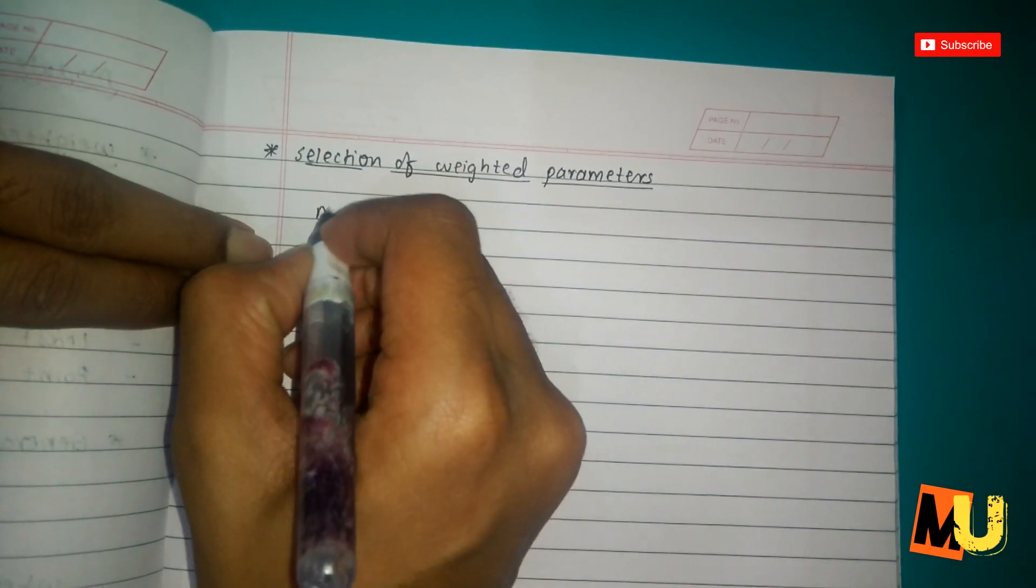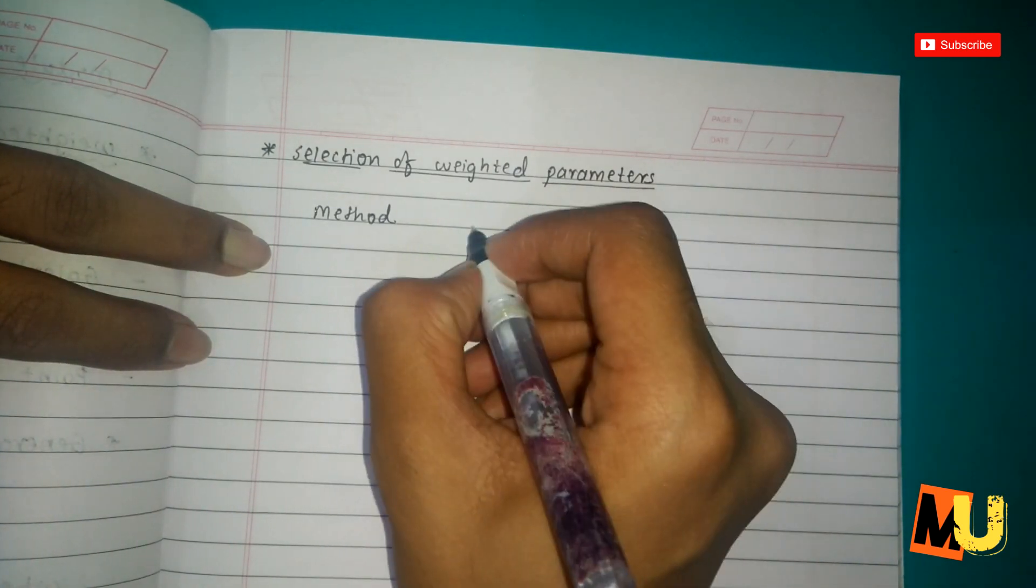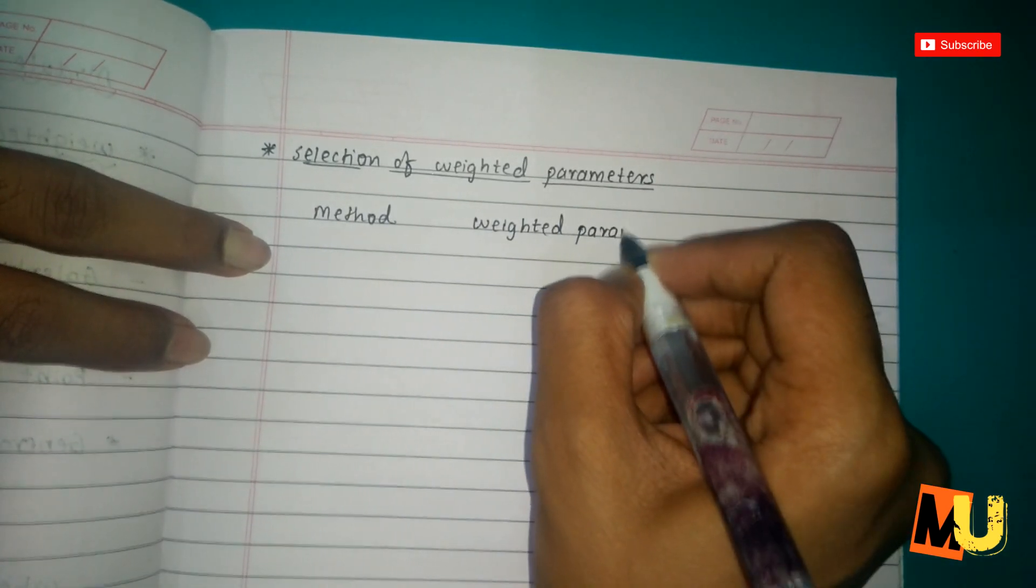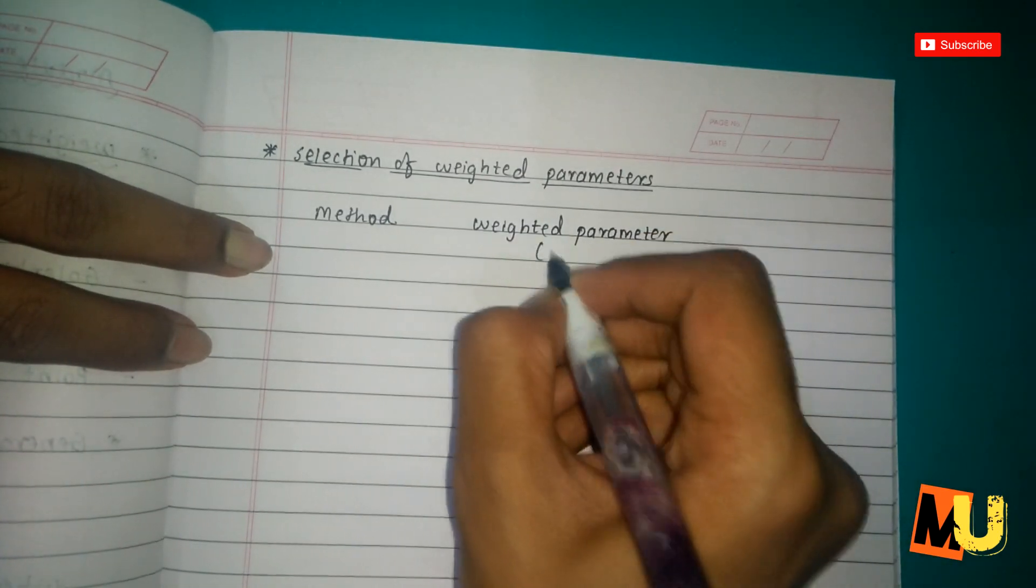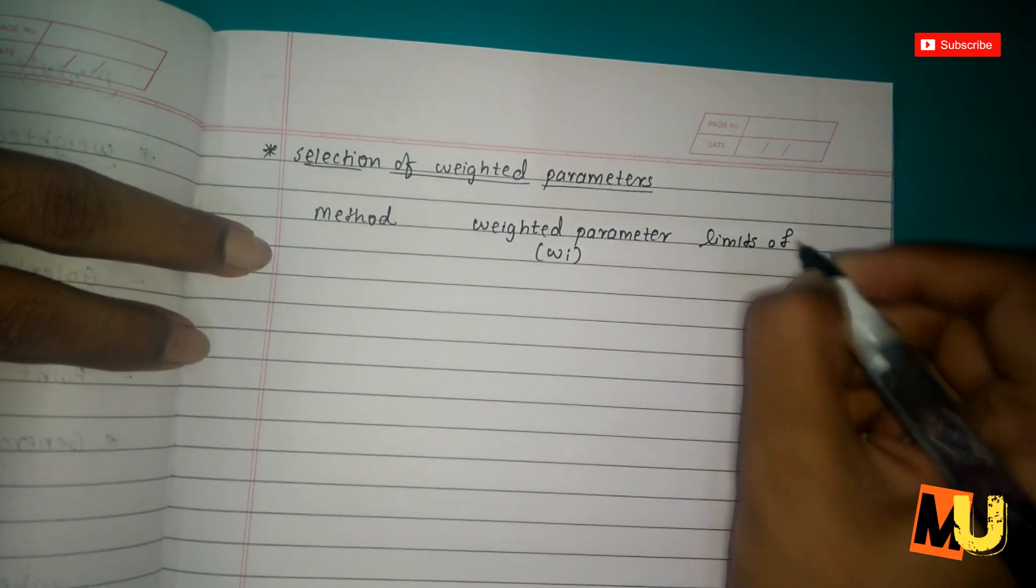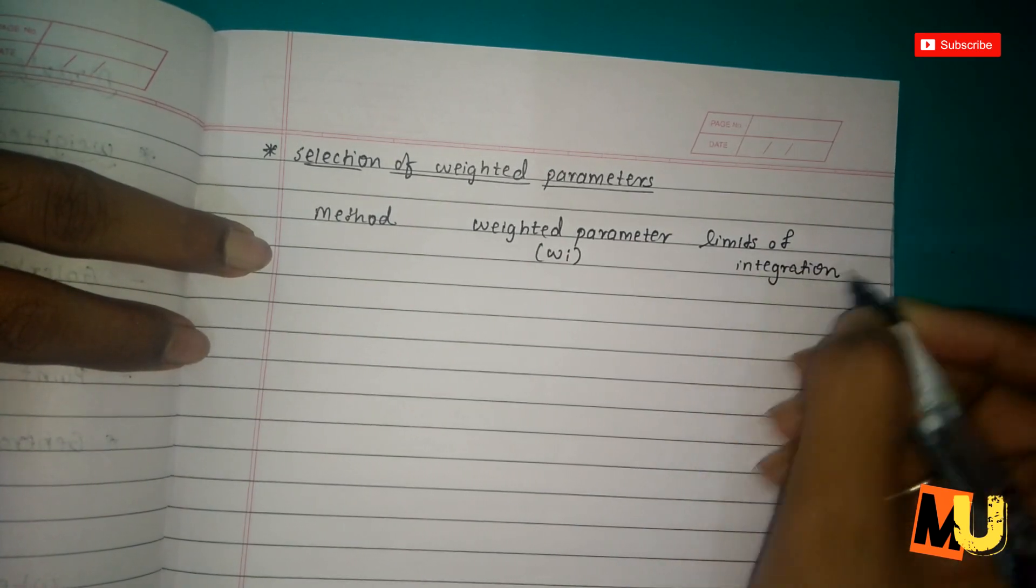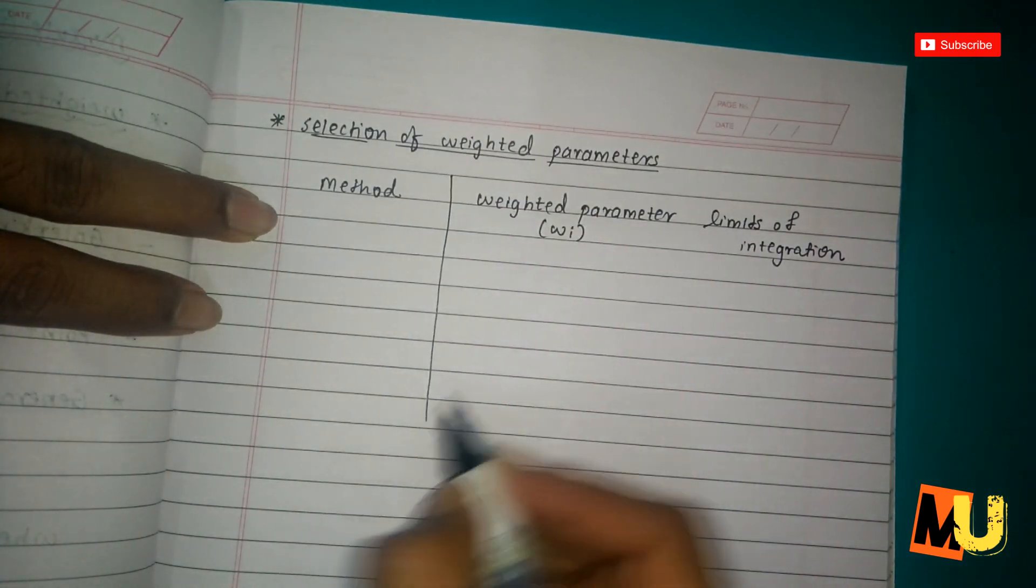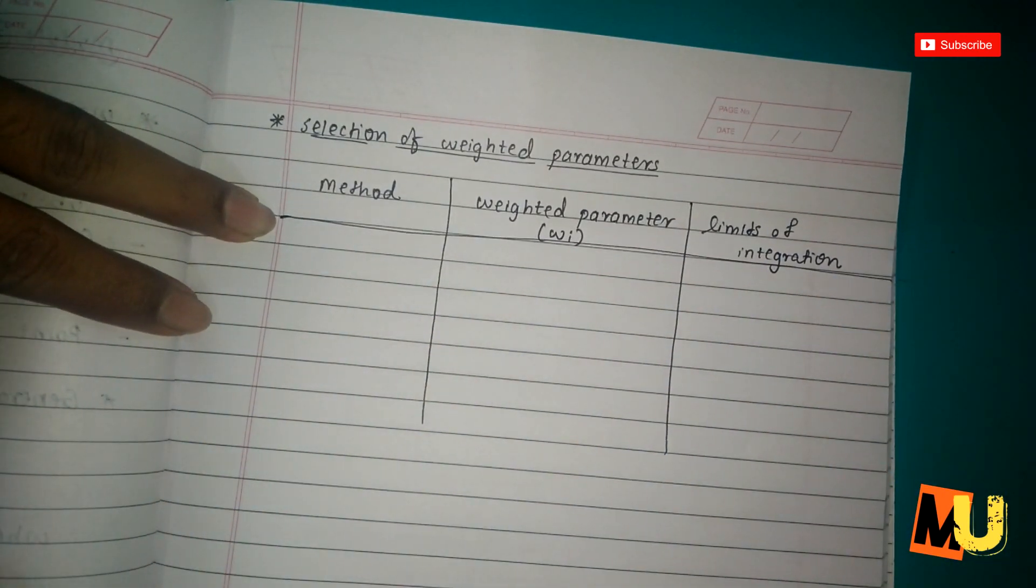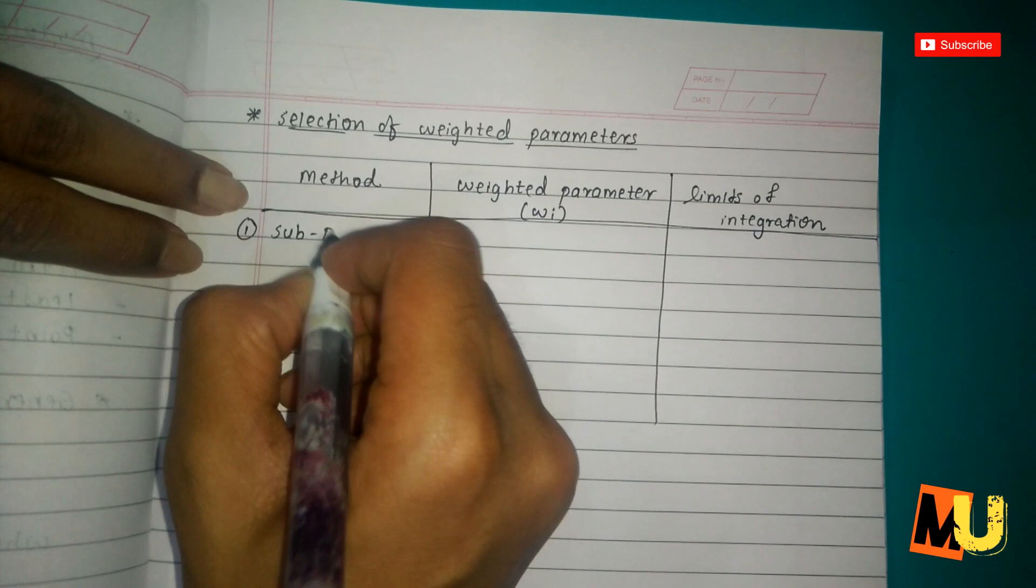Now we are making a table of selection of weighted parameter. Here we will be making three columns: method, weighted parameter (w_i), and limits of integration. The first one is the subdomain method.